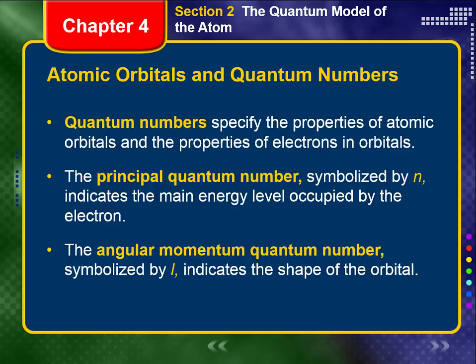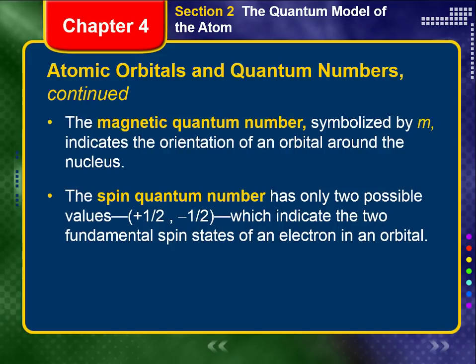Now let's move on to atomic orbitals and quantum numbers. Quantum numbers specify the properties of atomic orbitals and the properties of the electrons in those orbitals. There are four of them. The principal quantum number, symbolized by N, indicates the main energy level occupied by the electron. There is the angular momentum quantum number, symbolized by L, which indicates the shape of that orbital. We have the magnetic quantum number, symbolized by M, which indicates the orientation of an orbital around the nucleus. And lastly, the spin quantum number, which only has two possible values — plus one-half or minus one-half, also known as up-spin or down-spin.